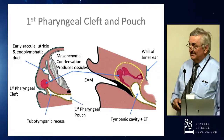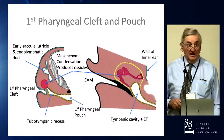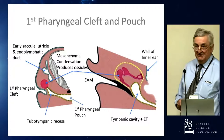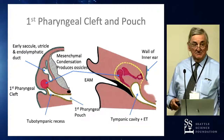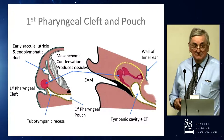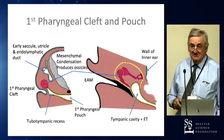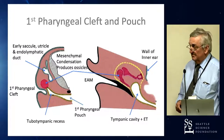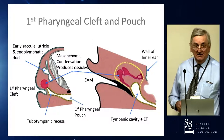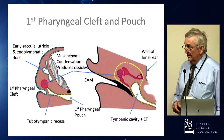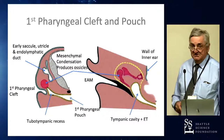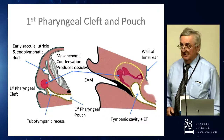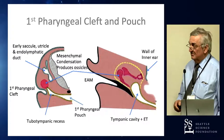The first pharyngeal cleft brings back memories — first pharyngeal pouch. That obviously becomes the external auditory meatus, and the pouch becomes the middle ear and the Eustachian tube. And the little blob of mesenchyme becomes the ossicles. So that sets the scene of where it all starts.